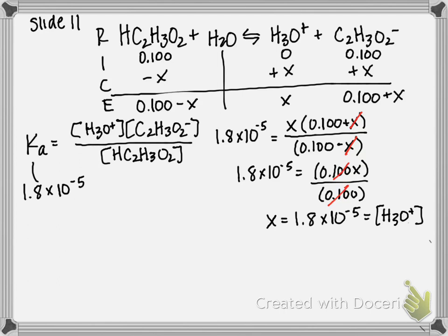So after you figure out hydronium, next step is to use our pH equals negative log of H3O plus to give us our pH. And we'll plug in our 1.8 times 10 to the negative 5 value into that. So pH equals negative log 1.8 times 10 to the negative 5.